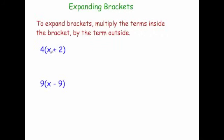So for instance if we had 4 bracket x plus 2, to expand this you're going to multiply the x by 4 and the 2 by 4. So 4 times x is 4x, and then 4 times 2 is 8. So the answer would be 4x plus 8.